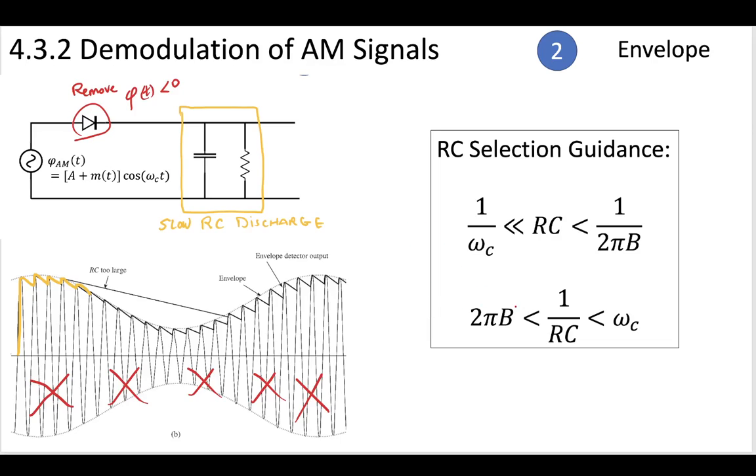So you should select your RC circuit values so that they are somewhere in between your carrier frequency and your baseband frequency. So by selecting those, you can do a very simple envelope demodulation of the AM signal.